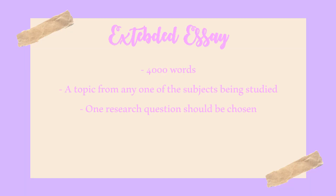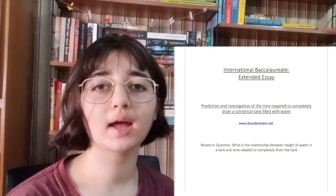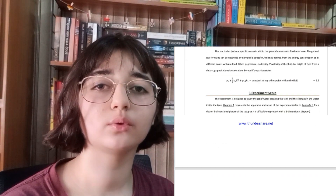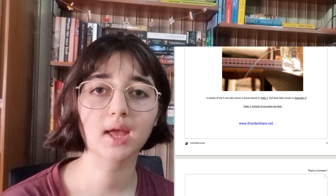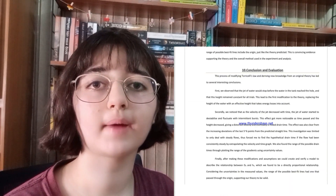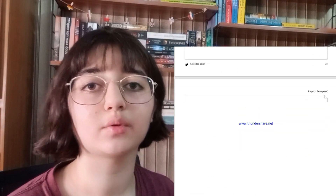The extended essay is a 4000-word essay done on a topic from any subject the student is studying in the IB program. The student must pick one research question upon which they base the entire essay. The essay consists of a title page, an index, and the body. For science students, if they choose a research question based on an experiment, the essay will include background information, any prior research, and in the end, references citing all background research used.